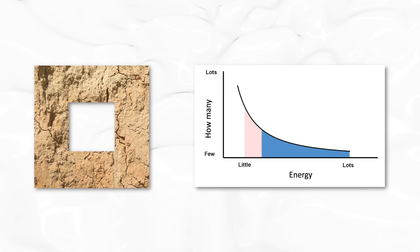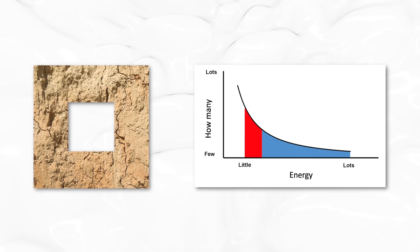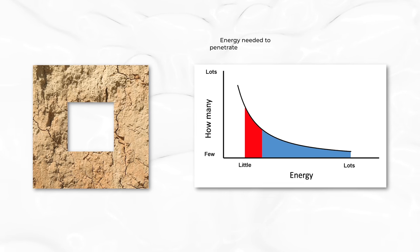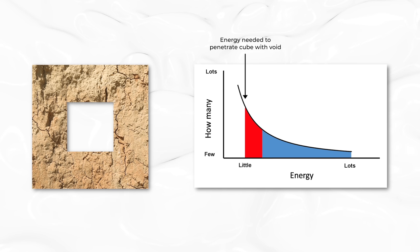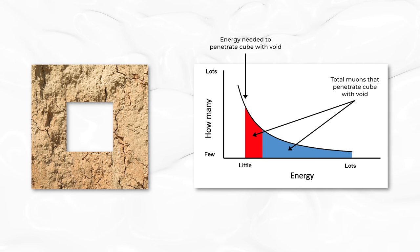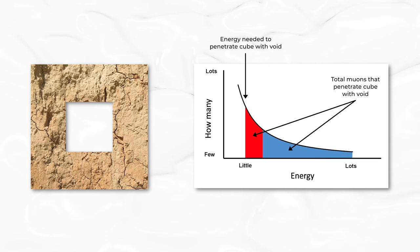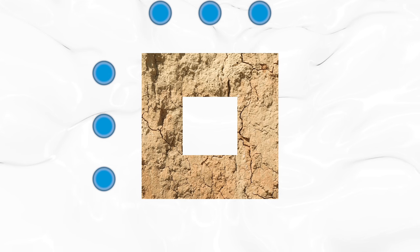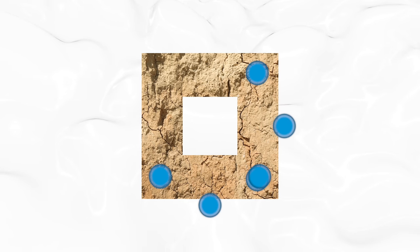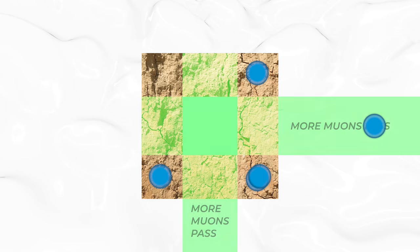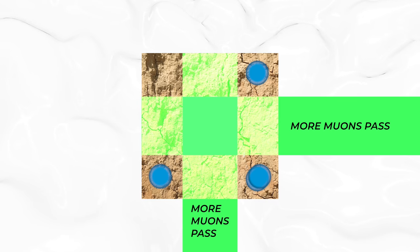However, if there's a room somewhere inside the cube, that means less rock and therefore it's easier for muons to get to the other side. Lower energy muons can pass through, so you'll see more muons than you would if the cube were solid. So then what you would do is move your detector all around the cube and look at it from every side. And we see here how you would detect a room inside the cube.